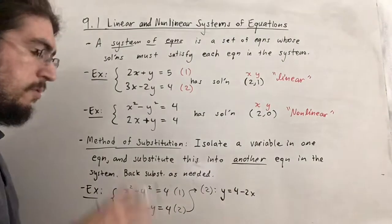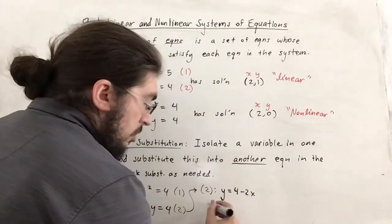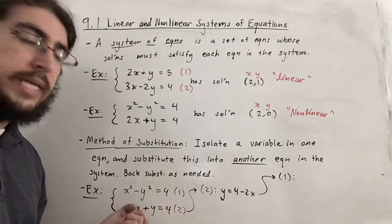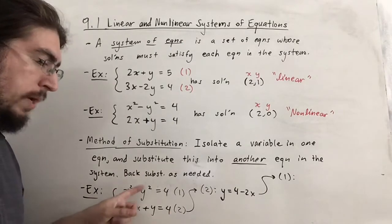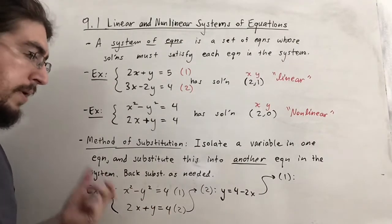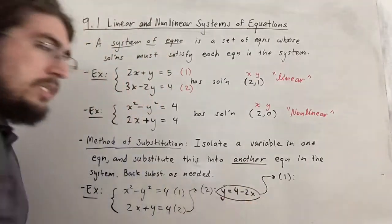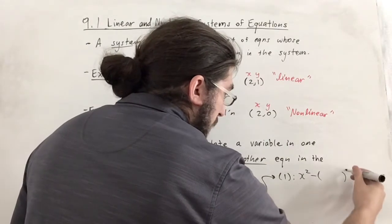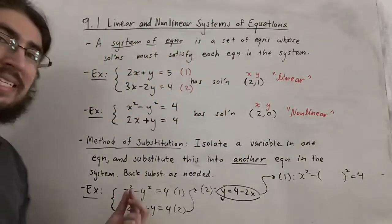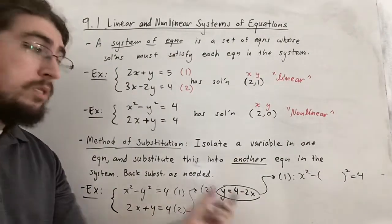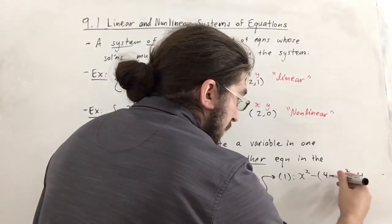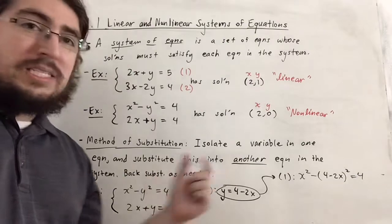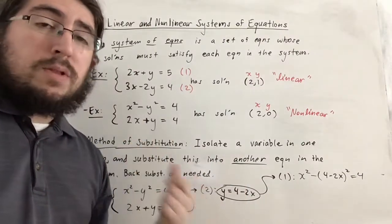If I substitute y = 4 − 2x into equation 1, which says x squared minus y squared equals 4, we replace y with the expression (4 − 2x). This gives us x squared minus (4 − 2x) squared equals 4. This is now an equation in only one variable, and we can definitely solve for x.